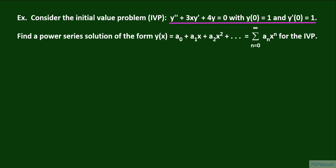We are to find a power series solution of the form y of x equals a sub 0 plus a sub 1 times x plus a sub 2 times x squared, and so on. In summation form, this is equal to the sum from n equals 0 to infinity of a sub n times x to the nth power. We will assume that this power series solution is uniformly and absolutely convergent on some finite interval of positive length.